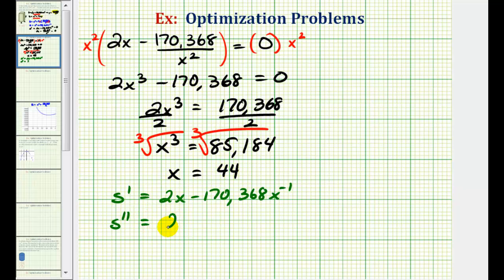So now we'll find the second derivative and determine the sign of the second derivative when x equals 44. The derivative of two x would just be two. The derivative of the second term we're going to multiply by negative one. So it's going to be plus 170,368. Subtract one from the exponent. That would be negative two, which we can also write as two plus 170,368 divided by x squared.